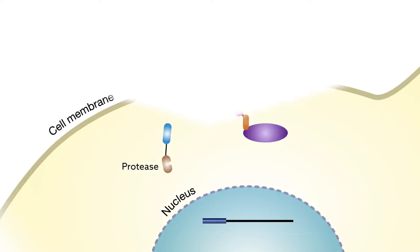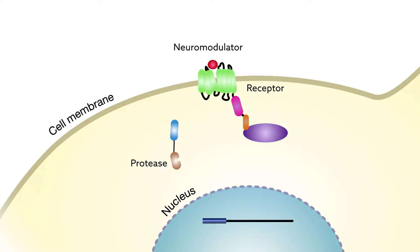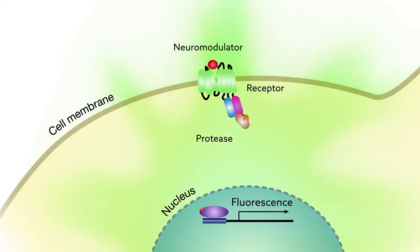Researchers have typically relied on sensors that change gene expression to watch neuromodulators at work. When a neuromodulator binds to a receptor fitted with this type of sensor, it drives the expression of a fluorescent protein. This tiny beacon thus labels cells influenced by the neuromodulator.